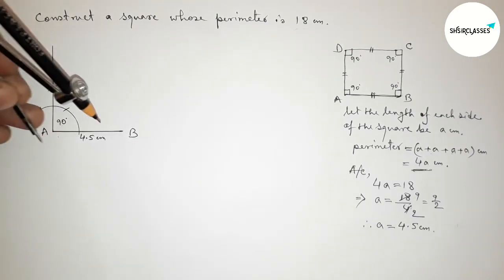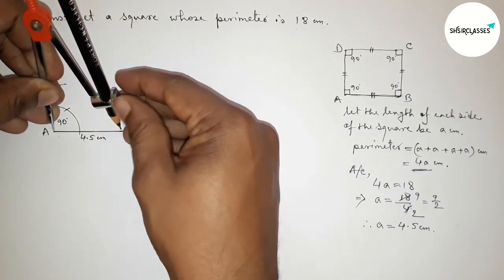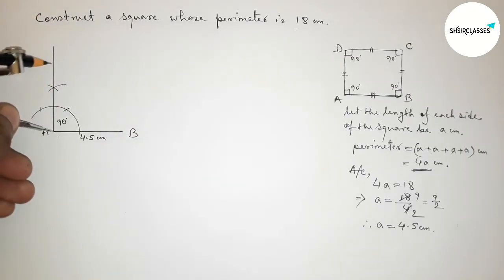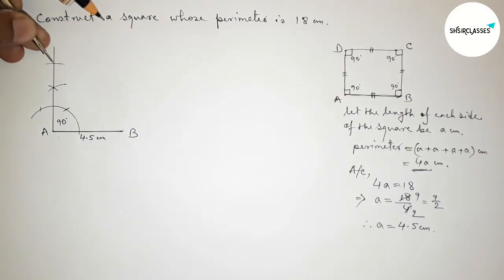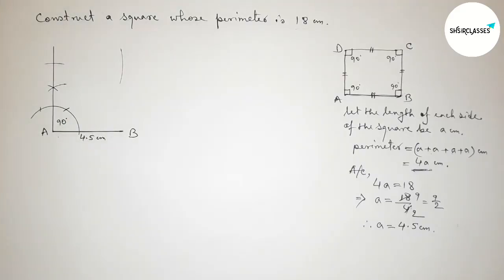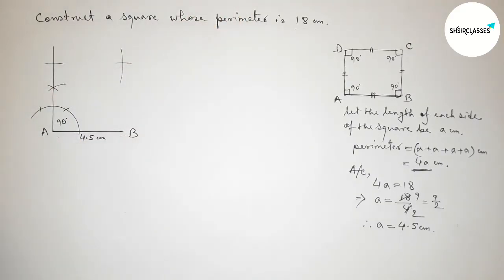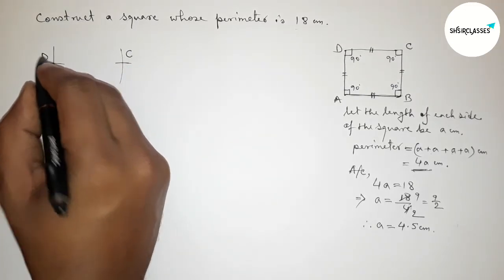Taking the length AB equal to 4.5 centimeters and cutting here. Then with the same length putting the compass and drawing an arc, then cutting again to mark the next point. Taking points C and D.